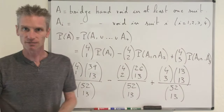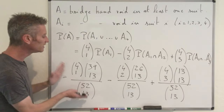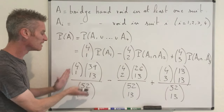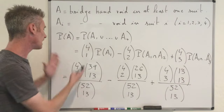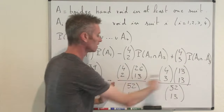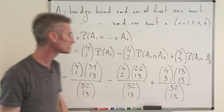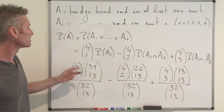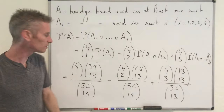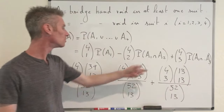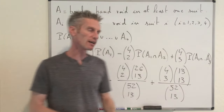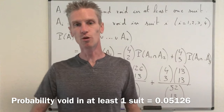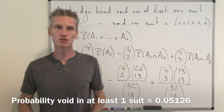So that's the correct answer. The leading term is the number the author originally gave, and now we understand why it was wrong: we need correction terms for intersections of two or three events, because the four events are not mutually exclusive. Using a calculator to compute this explicitly, the probability that a bridge hand is void in at least one suit is approximately 0.05126.